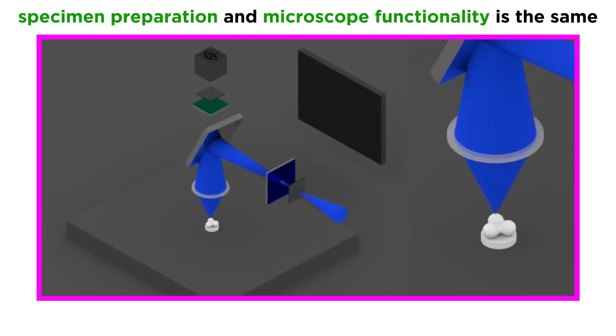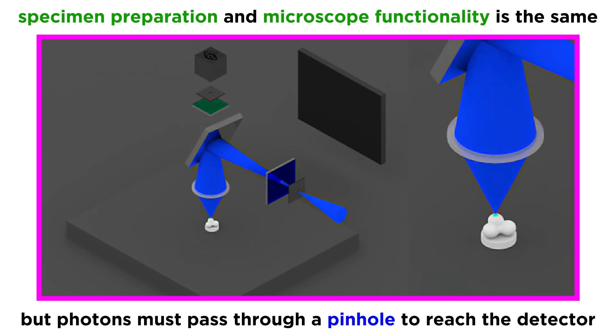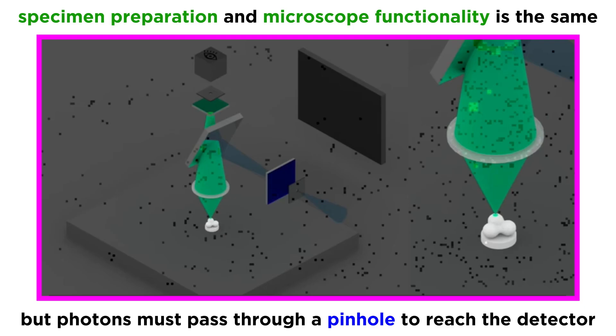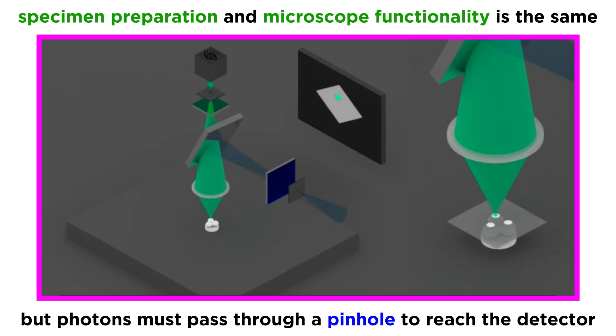Another type of fluorescence microscopy is confocal fluorescent microscopy, which is very similar to wide field. The specimens are prepared the same way, and the functionality of the microscope is the same as wide field, except that before the emitted photon reaches the detector, it passes through a pinhole which only lets a very small part of the image through. This allows for better filtering of the photon emitted by the labeled structure from any background fluorescence.